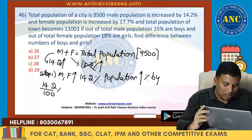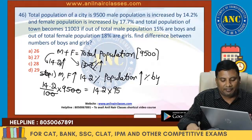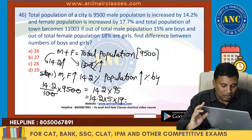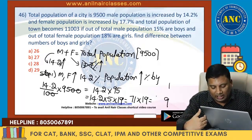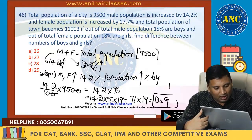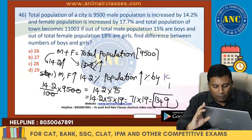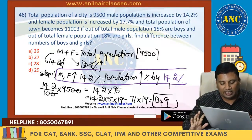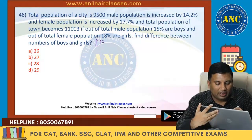14.2% of 9,500: divide by 100 gives 14.2 × 95 = 14.2 × 5 × 19 = 71 × 19. 19 ones are 19, 7s are 133, plus 1 = 134. Wait — 71 × 19 = 1,349. If male and female both increase by 14.2%, population also increases by 14.2%, giving an increase of 1,349. We keep 1,349 separate for use in the next step.